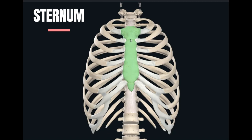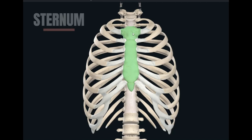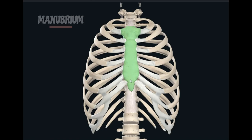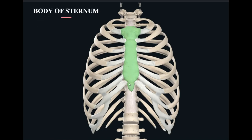The uppermost part is known as the manubrium. Below the manubrium, this is the body of the sternum, and this small tip is known as the xiphoid process.